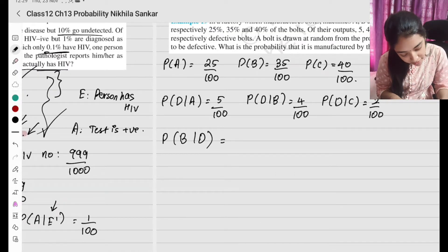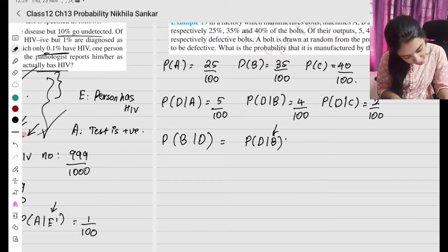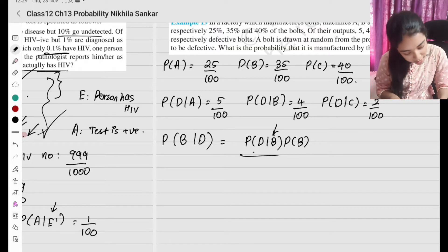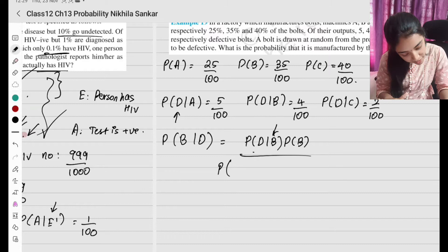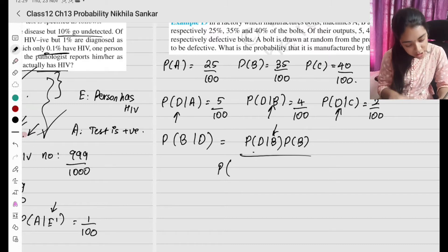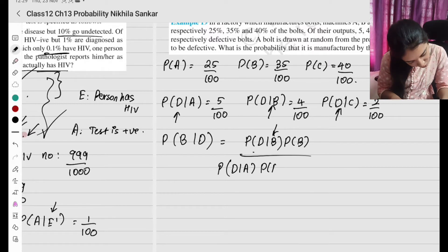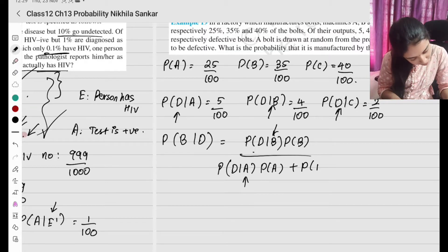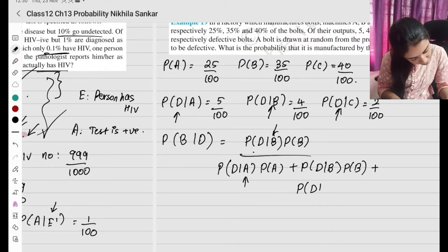According to the formula, probability of B given D equals probability of D given B times probability of B, the whole divided by the sum of all possibilities: D given A times P(A), plus D given B times P(B), plus D given C times P(C).